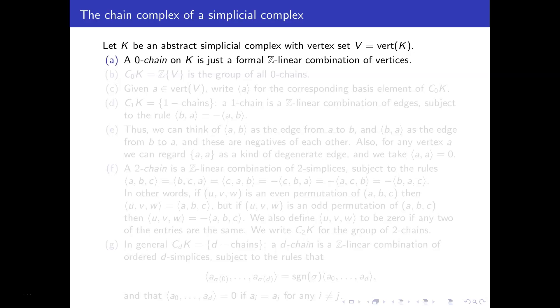So by a 0-chain on K, I just mean a formal Z-linear combination of vertices. So like maybe if a, b, and c are vertices, then 5a minus 6b plus 2c, that would be a formal Z-linear combination of the vertices. And we're going to write C_0(K) for the group of all these zero chains.